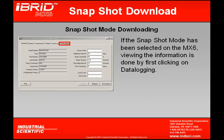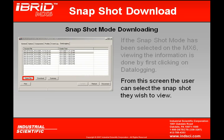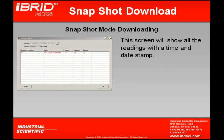If the snapshot mode has been selected on the MX-6, viewing the information is done by first clicking on Data Logging. Once my data is pulled in, if I wish to view one specifically, I can highlight it and then click Open File. This screen will show me the actual reading with a time and date stamp.